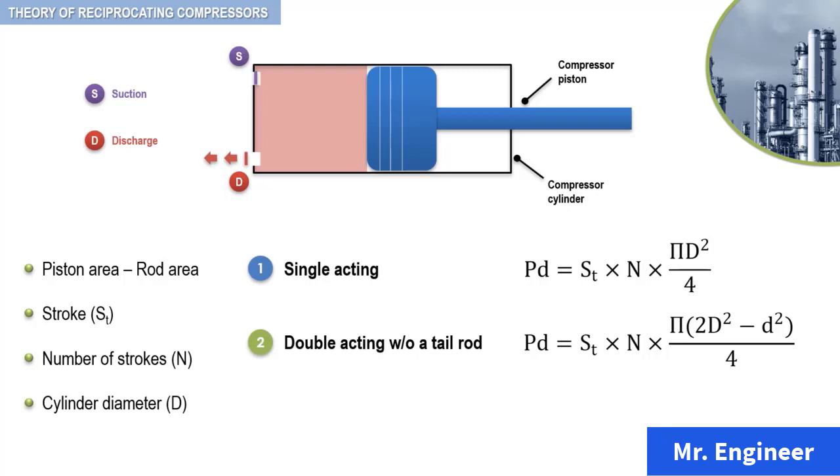And finally, for a double acting cylinder with a tail rod, you can use this last equation.